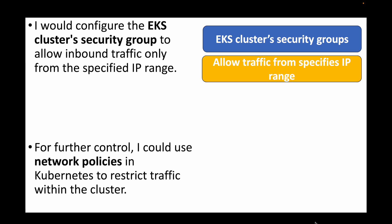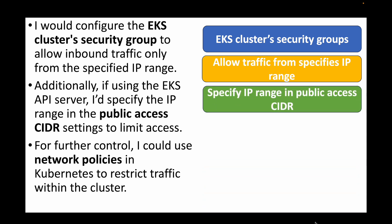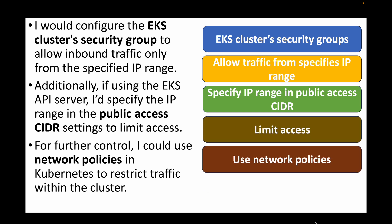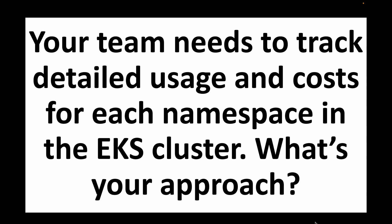Additionally, if you are using the EKS API server, you can specify the IP range in the public access CIDRs settings to limit access. If you want more granular control, you can make use of network policies in Kubernetes to restrict traffic within the cluster itself — essentially controlling traffic and setting up firewall rules at the cluster level.